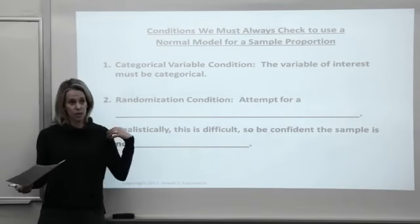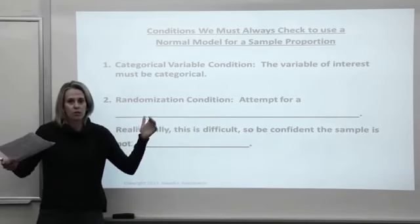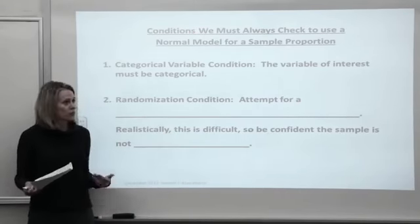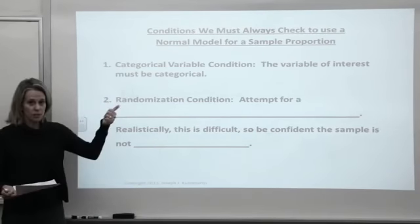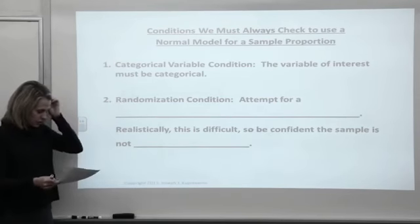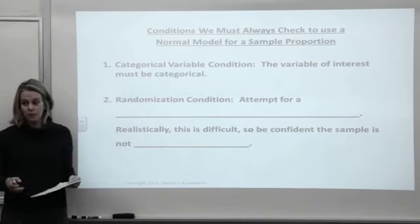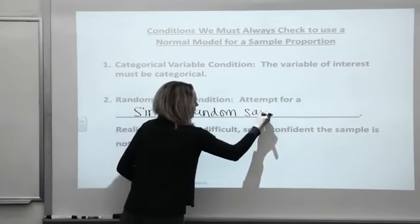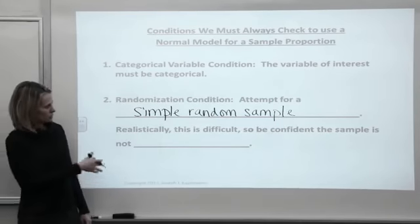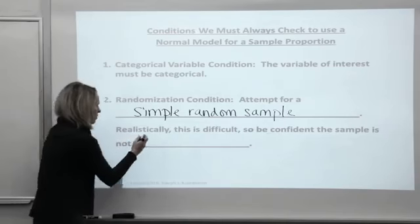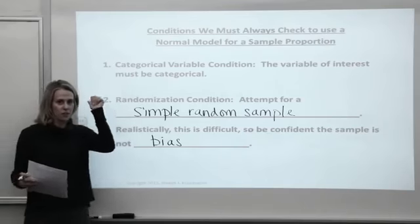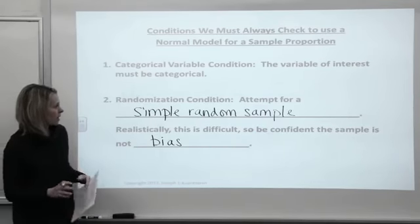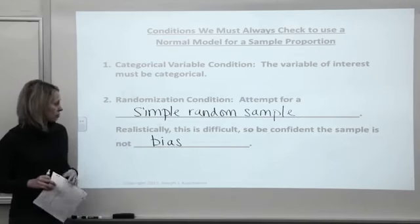Other examples include the percentage of people that are female, or the percentage of people that drive a truck — both categorical variables. The second condition is the randomization condition. We should attempt to have a simple random sample. That's not always feasible, so you at least want to be confident that your sample is not biased. It certainly wouldn't be fair to go to a smoking area and take a sample from there — we'd clearly have bias in that sample.